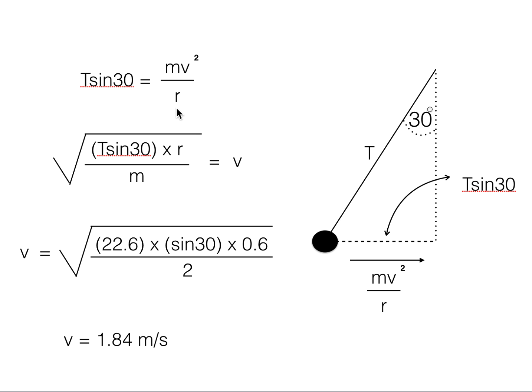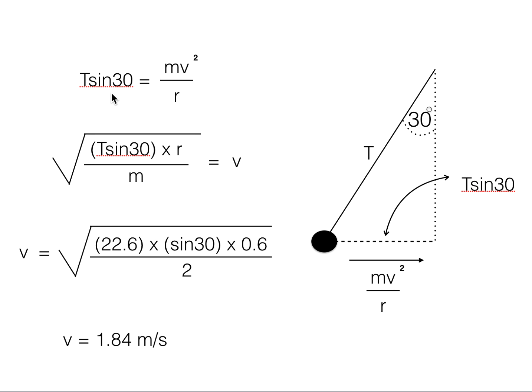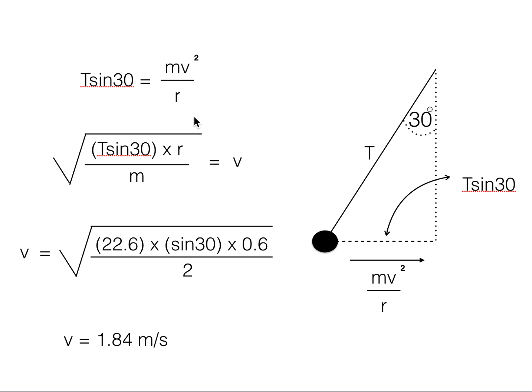And we can rearrange this equation to isolate v, and we do that by multiplying by r, dividing by m, and taking the square root of both sides.